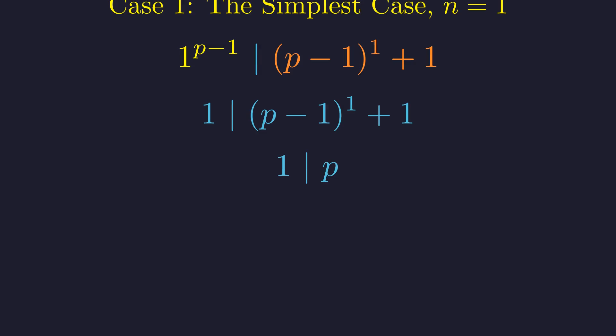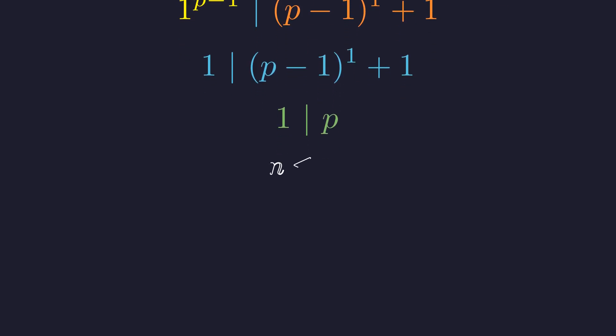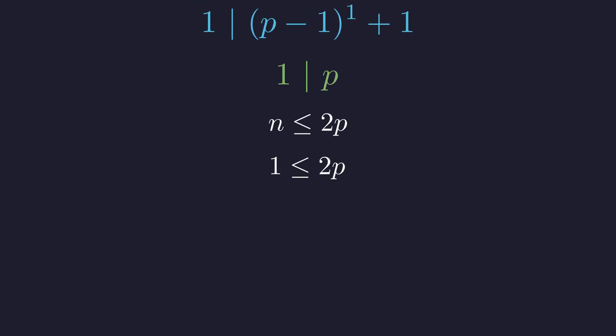The right side simplifies to p. The condition reduces to 1 divides p, which is true for any integer p. Since the problem requires p to be prime, this condition is always met. We must also verify the second condition, that n ≤ 2p.